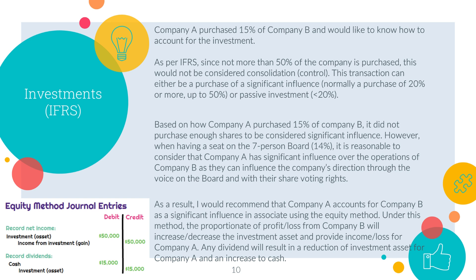I try to structure my response by talking about the issue, what the standard says, then the analysis, and my recommendation at the end. To get depth, you need to go through the various steps to discuss the issue in detail. I keep the issue description short since there aren't many marks for just describing it. I note that Company A purchases 15% of Company B and would like to know how to account for the investment. Then, as per IFRS, since not more than 50% is purchased, this would not be considered a consolidation — eliminating one of the three options, leaving two. The transaction can either be a significant influence or a passive investment. You can copy the criteria from the handbook or recite it from memory and get the same marks.